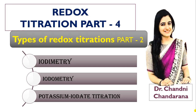Hello dear learners, welcome to Redox Titration Part 4, or we can say the types of Redox Titration Part 2. In Part 1 I discussed many methods like cerimetry, bromatometry, dichrometry, and permanganometry. Today in Part 2 I will discuss the types of redox titration such as iodimetry, iodometry, and potassium iodate titration.